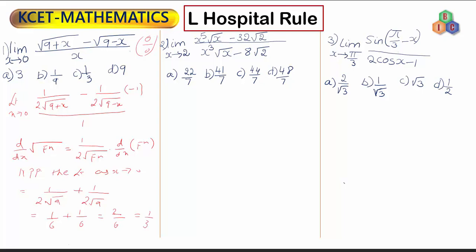Looking at the options given, option C — 1 by 3 — is the right answer. To summarize: we used L'Hôpital's rule by differentiating the numerator and denominator separately. Once the 0 by 0 form is resolved, we substitute the limit and get the final value 1 by 3.